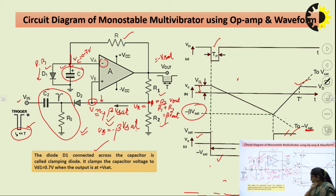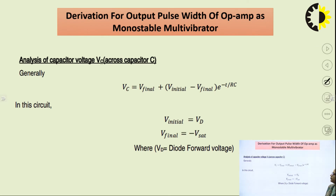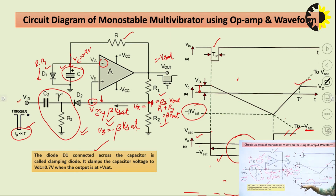This is how the monostable multivibrator operates. The duration of the quasi-stable state depends on the discharging of the capacitor, which discharges through resistor R. So the capacitor and resistor R determine the quasi-stable state duration, and we can derive this using the capacitor voltage equation.